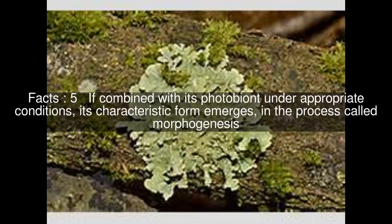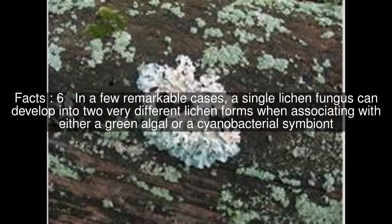If combined with its photobiont under appropriate conditions, its characteristic form emerges in the process called morphogenesis. In a few remarkable cases, a single lichen fungus can develop into two very different lichen forms when associating with either a green algal or a cyanobacterial symbiont.